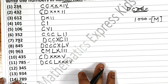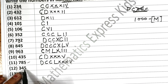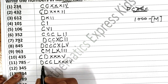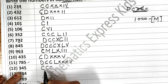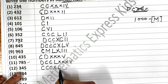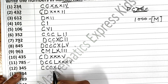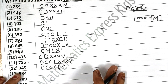Now the next one is 345. For 300: CCC — 100, 100, 100. Then for 45: I have written 50 first and then subtracted 10 from it, giving XL for 40. And then 5 as V.